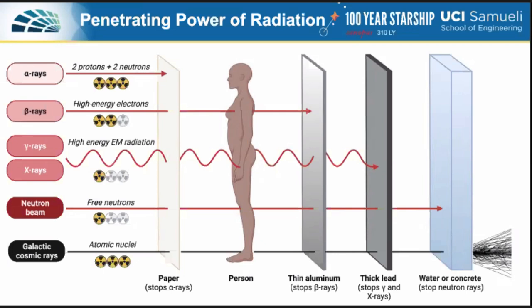Galactic cosmic radiation is composed of atomic nuclei — specifically the higher energy ones — that have been accelerated to relativistic speeds, originating from outside our solar system, hypothesized to be due to supernovae or supermassive black holes. No reasonable thickness of shielding material can safely stop galactic cosmic radiation. Shielding is only partially effective because increasing a shield's thickness leads to the production of high levels of secondary radiation, which can be absorbed even more easily by biological tissues.